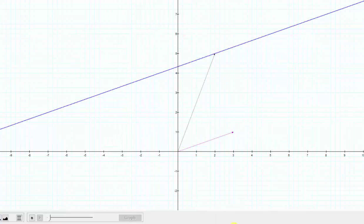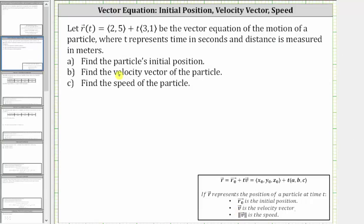So going back to our work, let's first find the particle's initial position, which is going to be the vector r sub zero, which can also be found by determining r of zero, which is equal to the vector with components two comma five plus zero times the vector with components three comma one, which is the velocity vector, which does give us the vector r sub zero that has components two comma five.